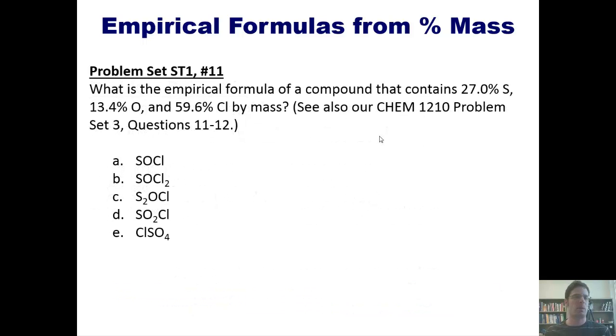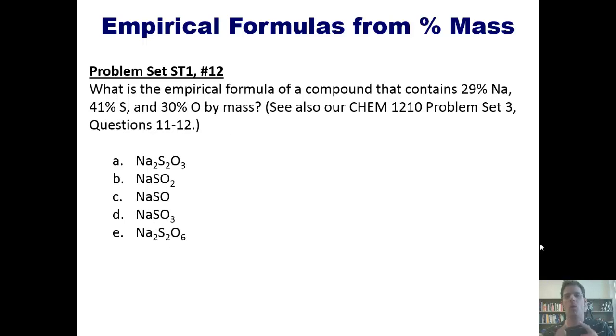Okay, good. Let's take a look at another problem then. What is the empirical formula of a compound that contains these percentages of sulfur, oxygen, and chlorine by mass? Having looked at the previous video covering the empirical formulas from the previous slide, I'll let you do this one on your own. And this one. What is the empirical formula of a compound that contains these percentages of sodium, sulfur, and oxygen by mass? Once again, I will let you do this one on your own.